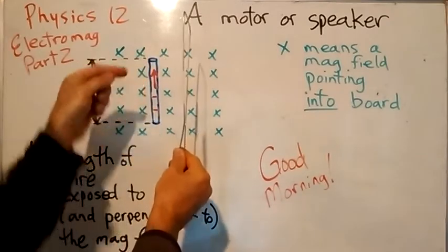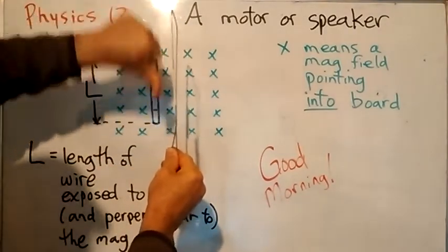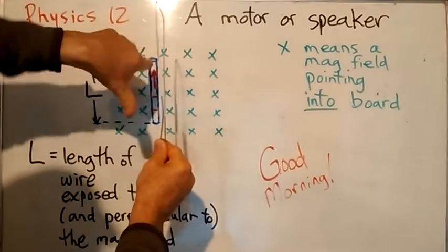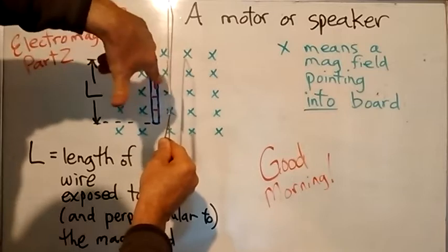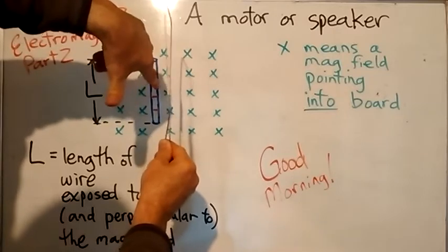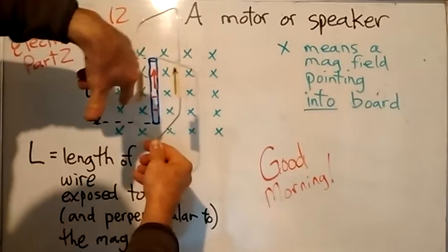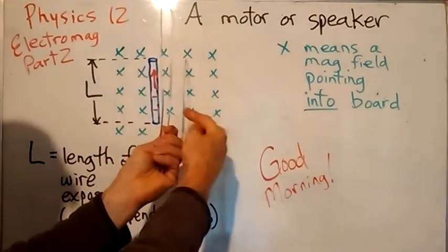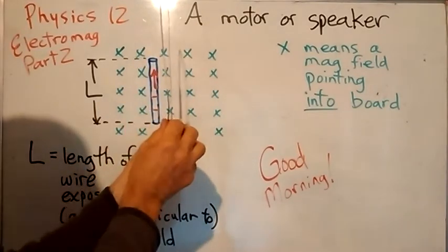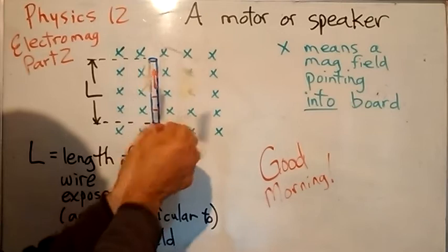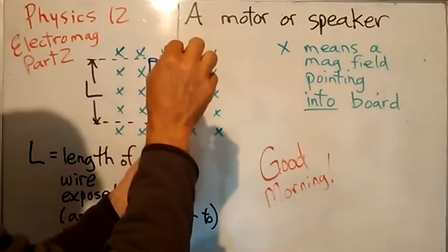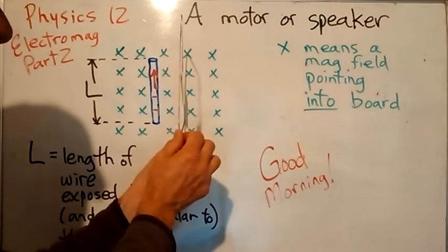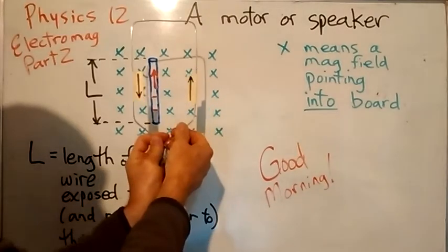On the other hand, this wire here has electrons going down and a magnetic field that way, so that wire at the back would get twisted the other way. So it's a double whammy - this one gets moved in one direction, this one gets pushed the other way, and we end up having a motor. So electricity in the presence of a magnetic field will cause the wires to twist.